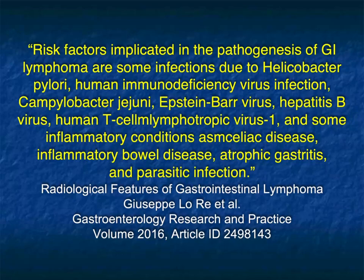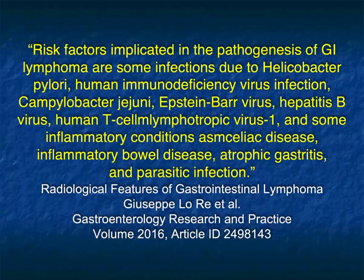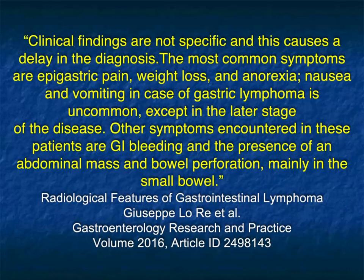Let's look at a few facts first. Risk factors implicated in the pathogenesis of GI lymphoma include infections due to H. pylori, human immunodeficiency virus infection, Epstein-Barr virus, Hep B, T cell, and some other things including celiac disease, IBD, and parasite infections. The clinical presentation is really not specific — sometimes it's low-grade fever, sometimes it's weight loss, sometimes it's epigastric pain, but it's very variable. You can't really say with certainty a patient must have lymphoma.